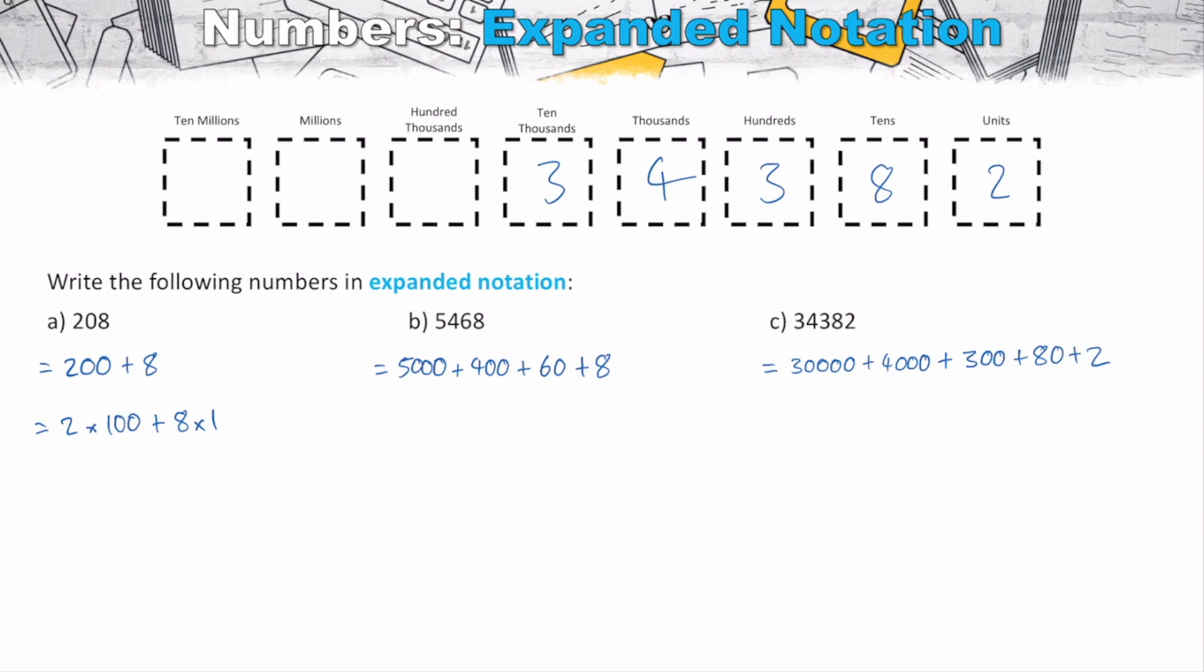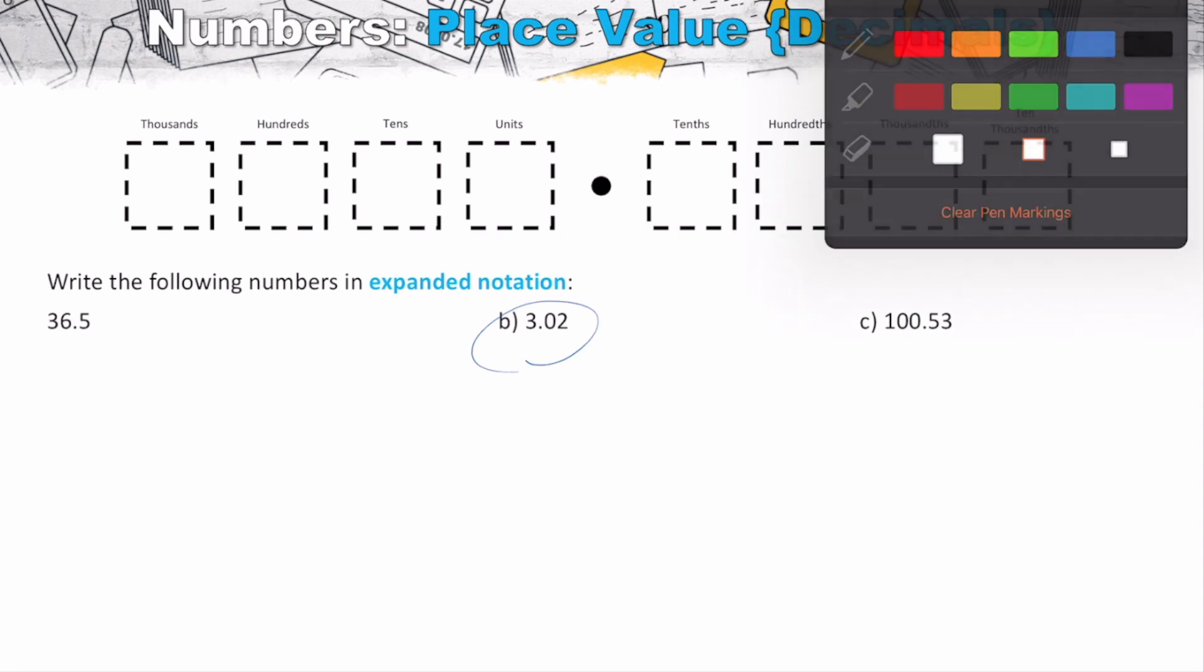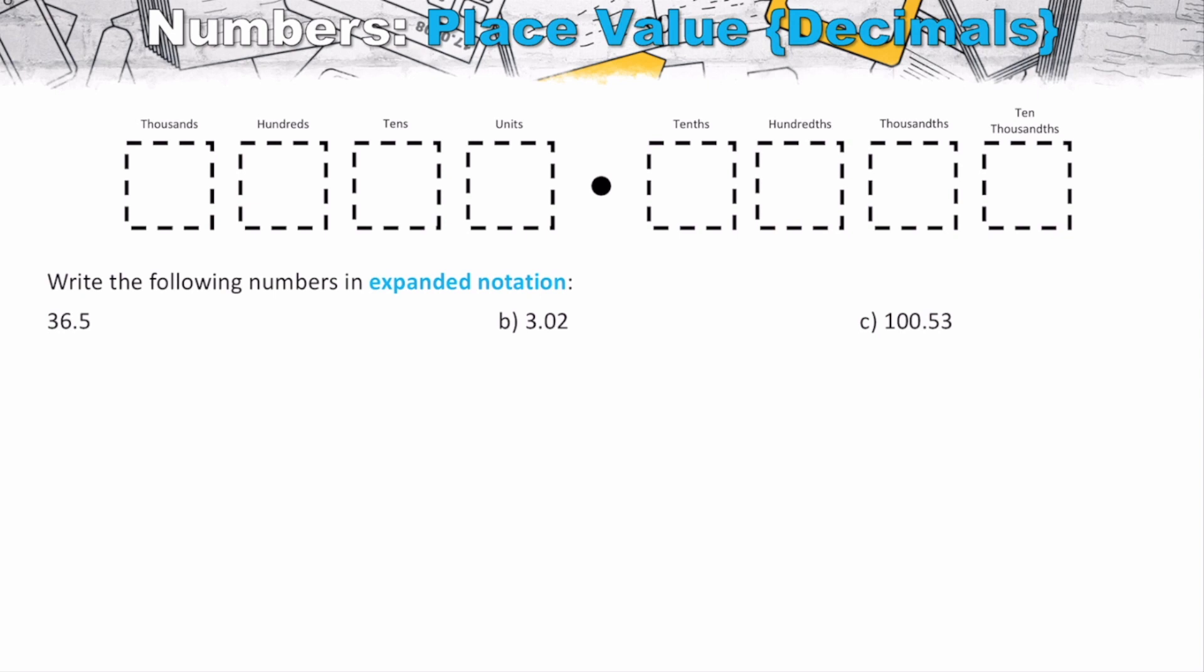Now I did briefly mention that this number line does infinitely extend either way. Let's have a look what happens when it goes this way to the right here. Now what happens when we start going to the right is we start dealing with parts of whole numbers, which we can refer to in fraction form. We can also refer to it in decimal form. Now, often what we've got down in here is representing decimal form. However, it's very important to note how each of the place values refer back to the units.